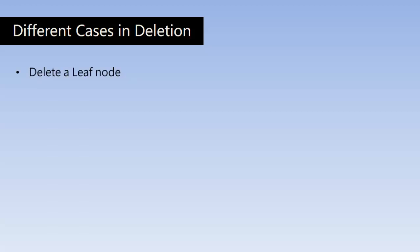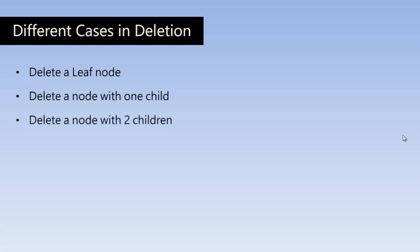You can delete a leaf node from the binary search tree, and you can also delete a node with one child. There may also be a situation where you want to delete a node with two or more children. So first let us analyze each and every case.